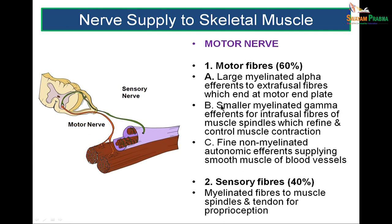Let us study the nerve supply to skeletal muscle. All muscles are supplied by nerves. In skeletal muscle, the motor nerve has 60% motor fibers and 40% sensory fibers. The motor fibers have different types of efferents: large myelinated alpha efferents, smaller myelinated gamma efferents relating to muscle spindles, and fine non-myelinated autonomic efferents supplying smooth muscle of blood vessels.